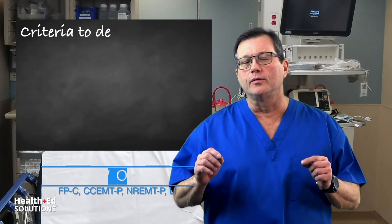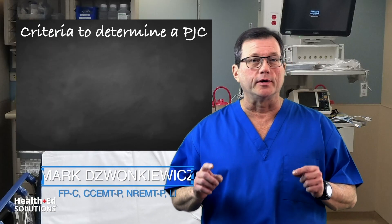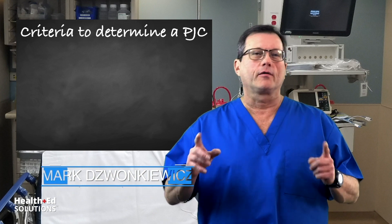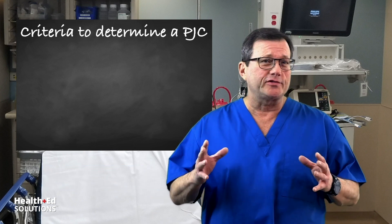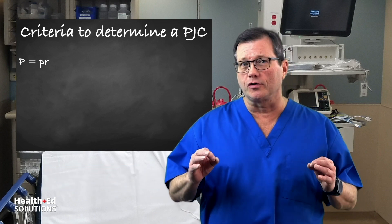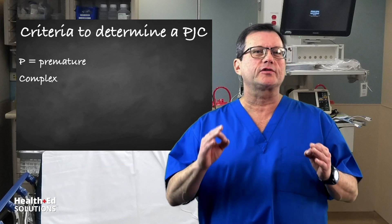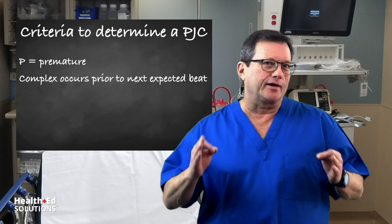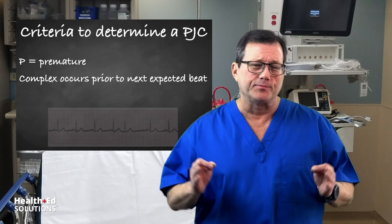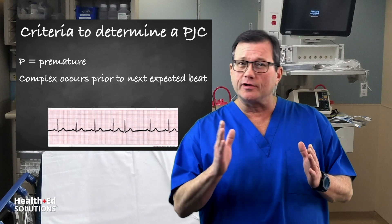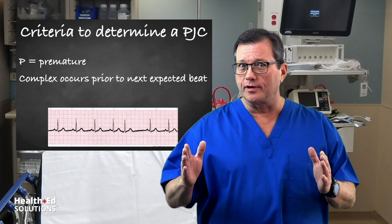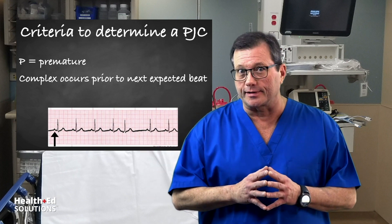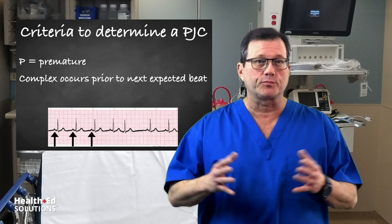What's the criteria we use to determine a PJC on our ECG tracing? Well, the P stands for premature, which means this complex is going to appear prior to the next expected beat. So as you're marching out your R waves, this complex will come before the next expected complex. It's premature.